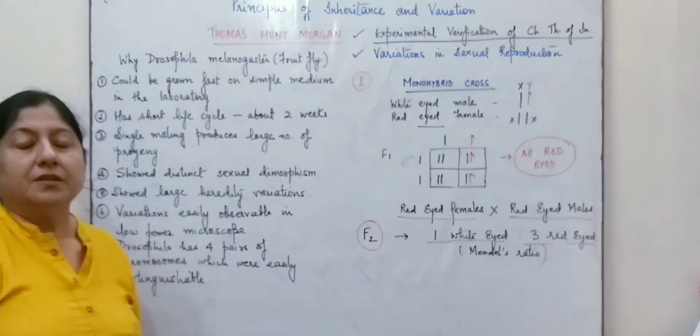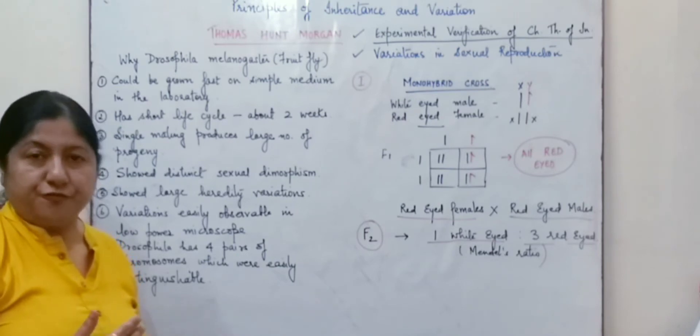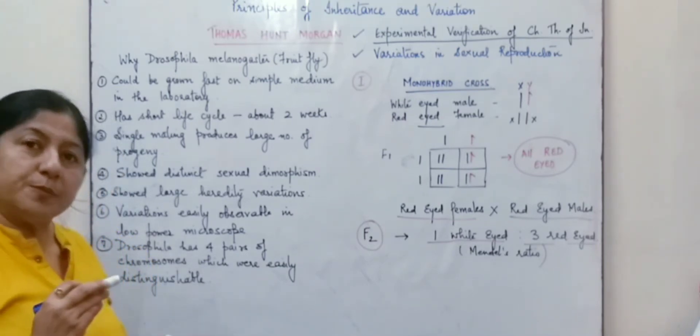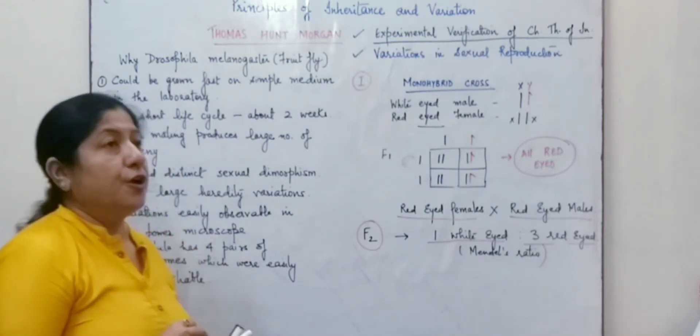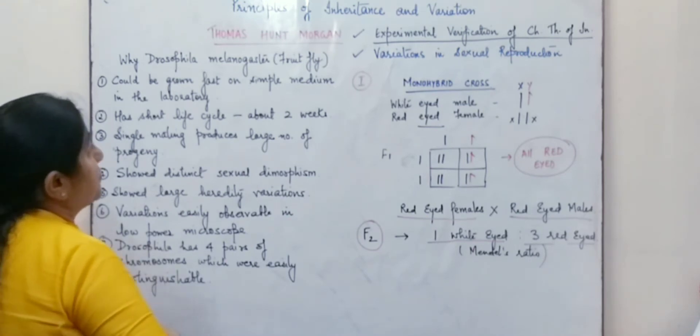After the chromosomal theory of inheritance was put forth by Boveri and Sutton, an experimental proof for the theory was given by Thomas Hunt Morgan in 1910.